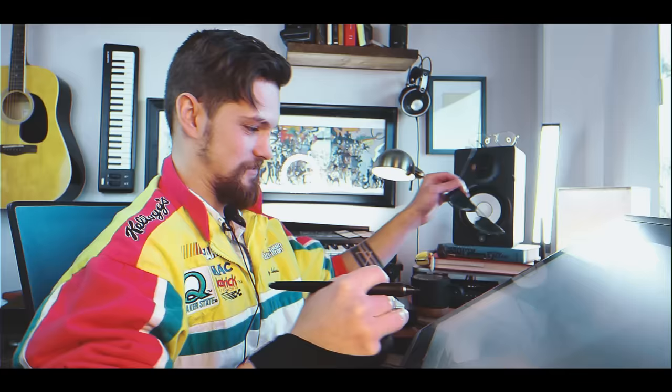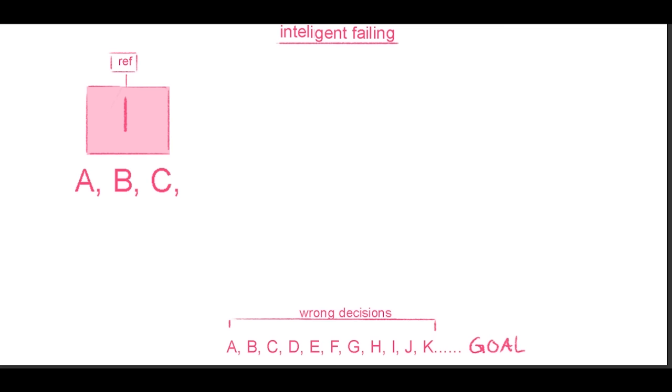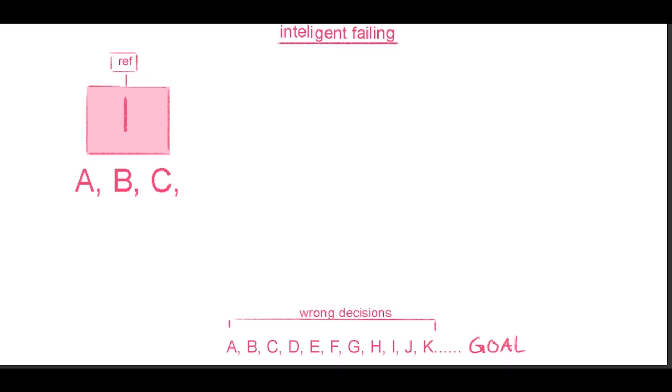What does this all revolve around? Getting better faster and noticing your mistakes. I'm going to go over intelligent failing first. What better way to help people understand something than a graph? Look at this graph. Down here you see wrong decisions — let's say our wrong decisions are A through K — and then at the very end you've got your goal. Intelligent failing is all about being okay with failing and realizing that you need to fail in order to move on to the next thing.